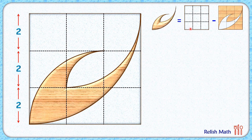The area of the square and the remaining figure are relatively easier to calculate. The square has side length 6 centimeters, so the square area is 36 centimeter square.